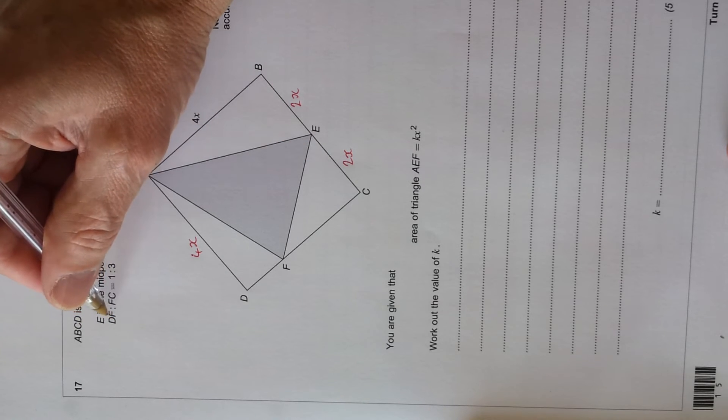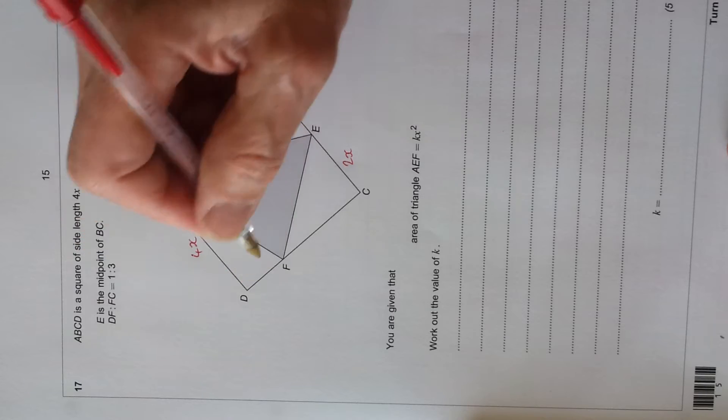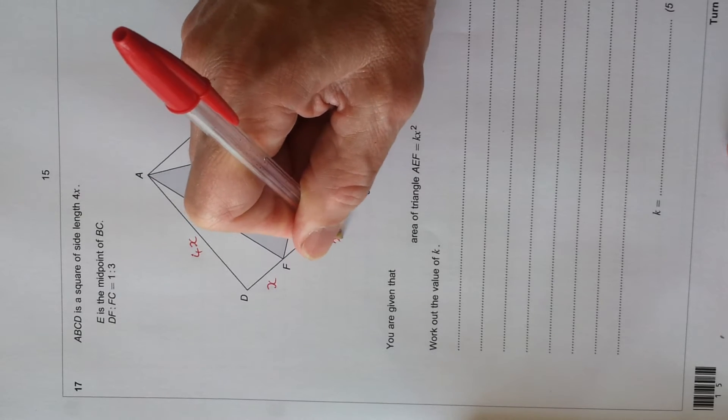And the ratio of DF to FC is 1 to 3, so if this is one part, DF, and FC is three parts, that's got to be x, that's got to be 3x.